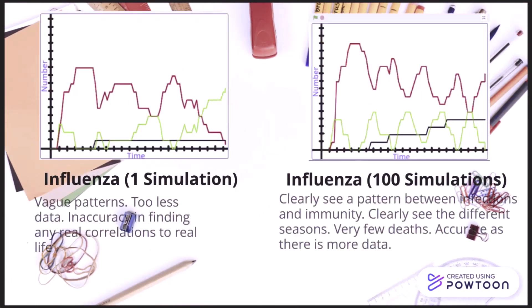The first picture shows the graph for only one simulation, whereas the second picture shows the graph of hundreds of simulations inside one graph. Both graphs show patterns that can be seen in real life, but the patterns can be seen more clearly and are more accurate in the second graph compared to the first graph. You can pause the video now to learn more about them.